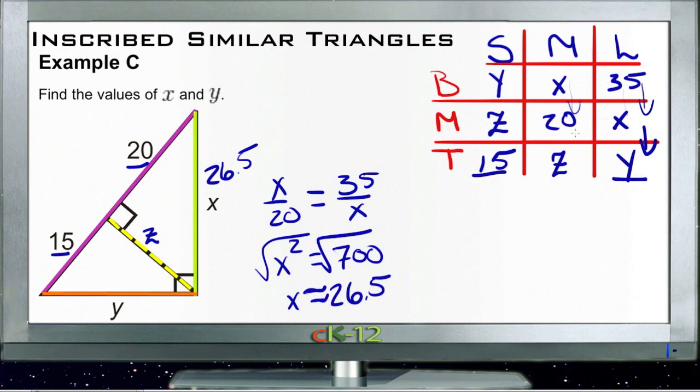How about... aha! 15 and y, and y and 35. So we have the smallest side and the largest side and the smallest side and the largest side. So the small side of the big one is y and the large side is 35, and the small side of the little one is 15 and the large one is y. That'll work.